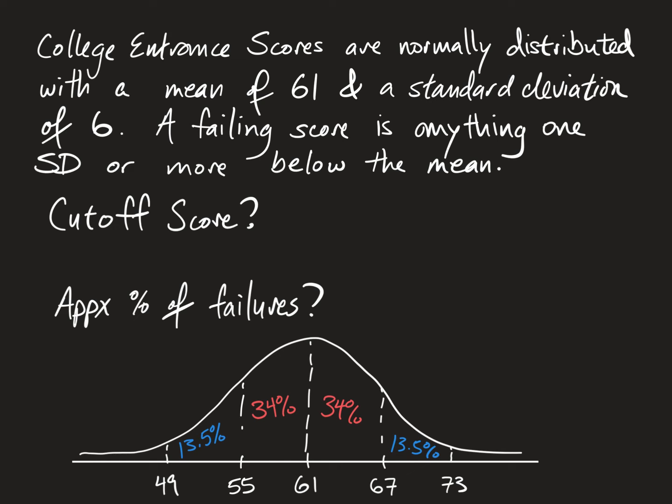Let's keep reading. This says a failing score is anything one standard deviation or more below the mean. Below the mean just means left. So that means anybody who got a 55 or less failed the test. So the cutoff score here, that's what a cutoff score is. What score determines whether you fail or pass? 55.